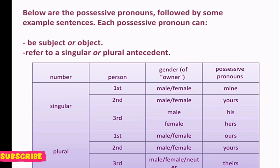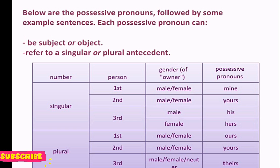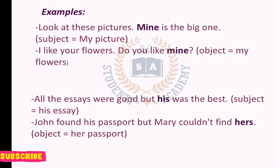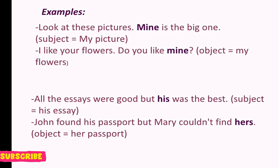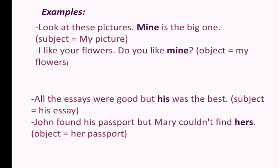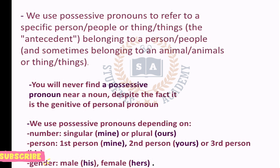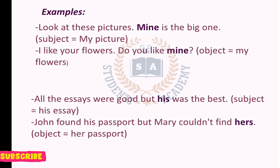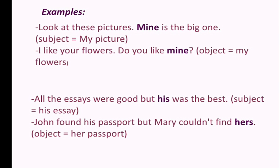Next ایک table دیا گیا جس میں first person، second person، third person کی partition کر دی ہے اور singular اور plural دونوں کا differentiation بتا دی ہے۔ Example: 'Mine is the big one' — یہاں 'mine' picture کی possession show کر رہا ہے کہ جو میری picture ہے وہ بڑی ہے۔ 'I like your flowers, but do you like mine?' — اس میں اوپر والی example میں pronoun as a subject use ہو رہا تھا اور یہاں as an object۔